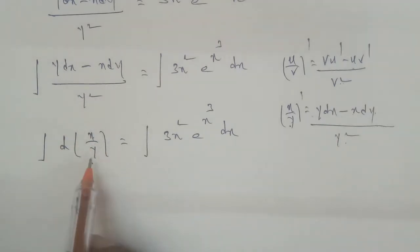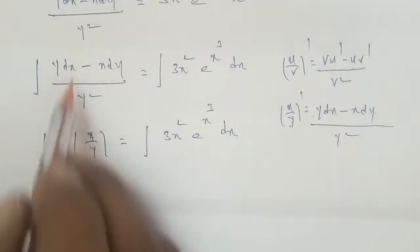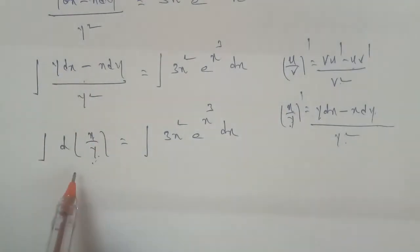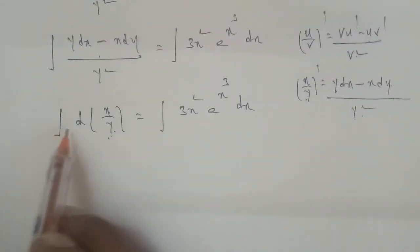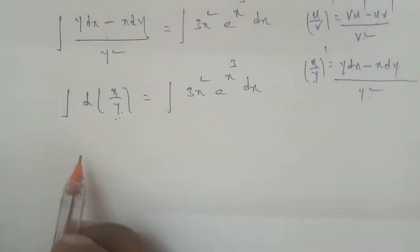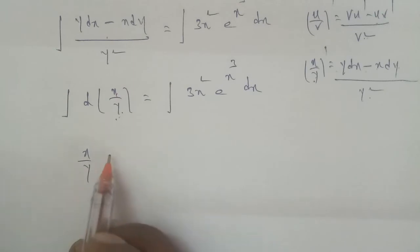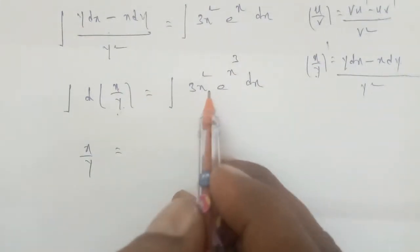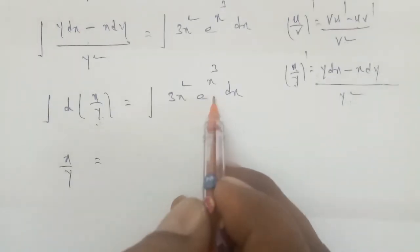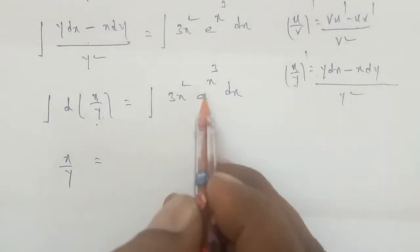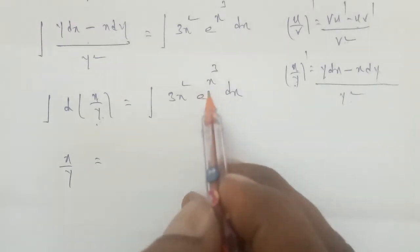So y dx minus x dy divided by y squared is the differentiation of x by y. Recognizing this, the left-hand side simplifies to d(x/y), and we can write the integral of d(x/y) equals the integral of 3x squared e to the power x cubed dx.